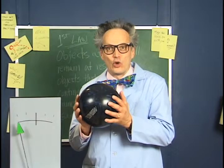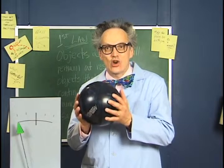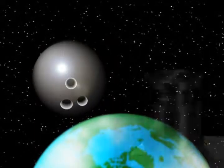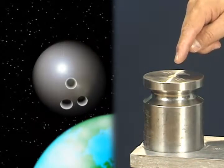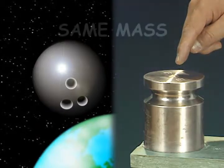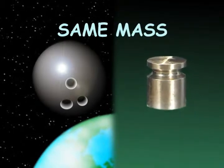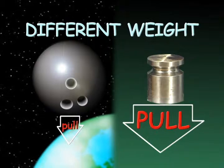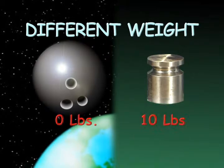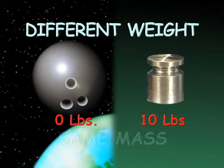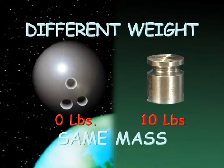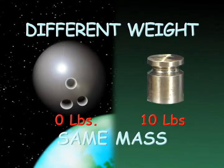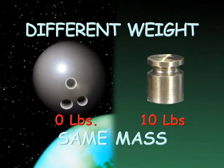The force of gravity is also affected by distance. The pulling force between two objects is stronger when the objects are closer together. If the bowling ball was in space and this cylinder stayed on Earth, they would still have the same mass because they would have the same amount of material. But they would have different weights because the pull of gravity on the ball would be less. Weight is how much the gravity of Earth is pulling on an object. The mass of an object is how much material is in it — it is always the same, no matter where the object is.